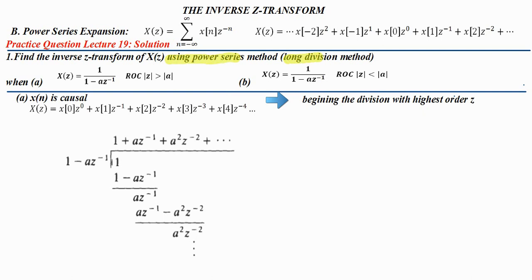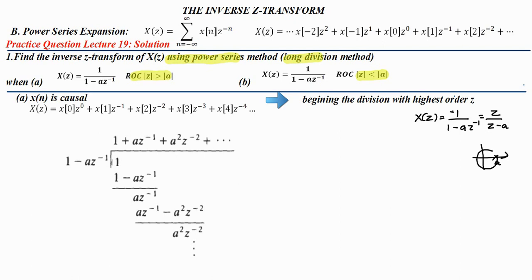Two cases are given for the same question. One ROC is modulus of z greater than a, and here modulus of z less than a. If you look at this particular question, X(z) is equal to — if you rearrange this — you will get 1 by 1 minus a z raise to minus 1. If you rearrange this, it becomes z by z minus a. And ROC of the signal is given; there is a pole at a and ROC is modulus of z greater than a. So this represents a causal signal.